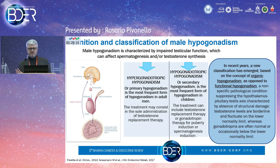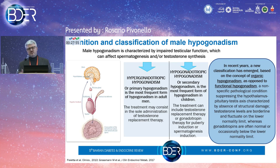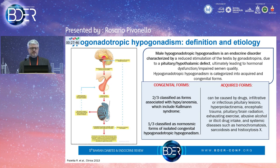Functional hypogonadism, also classified as late-onset hypogonadism, is a non-specific condition of the hypothalamus-pituitary-testis axis characterized by the absence of any structural damage in the axis. Testosterone levels in these cases are borderline and generally fluctuate around the normal limits, and gonadotropins can be normal or reduced.